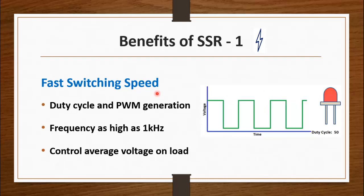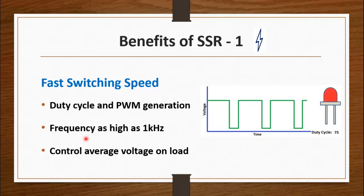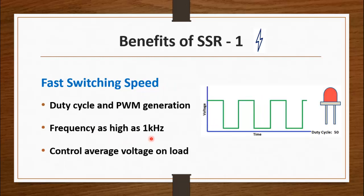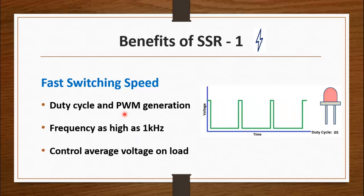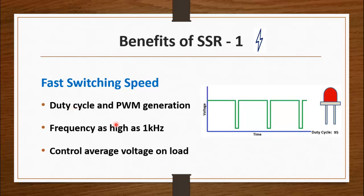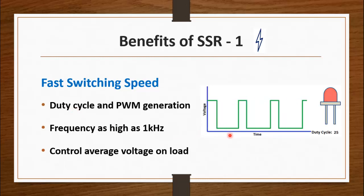The switching speed of a solid state relay can be as high as one kilohertz. This means you can use this relay to generate pulse width modulation (PWM), and you can also control the duty cycle. The duty cycle is basically the on/off period of a load.